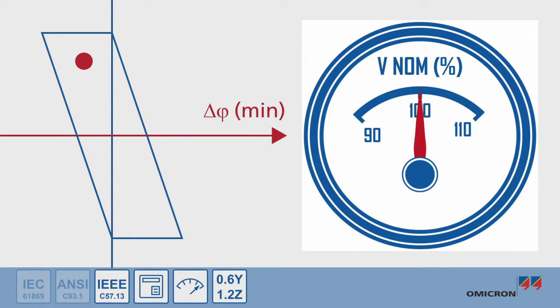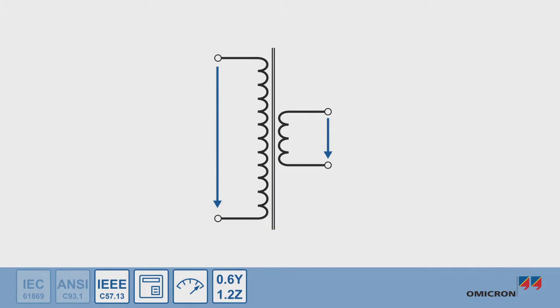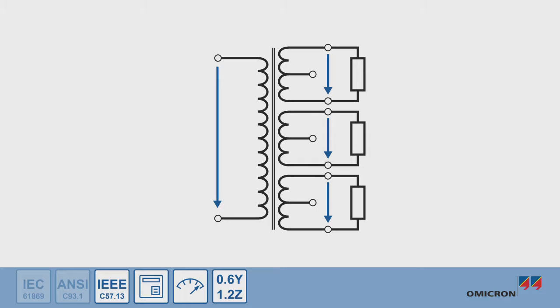The transformation accuracy of the transformer must stay within these limits for voltages ranging from 90 to 110% of nominal voltage. Accuracy ratings apply for the total burden of voltage transformer even if one of its windings is tapped or if it has several secondary windings.